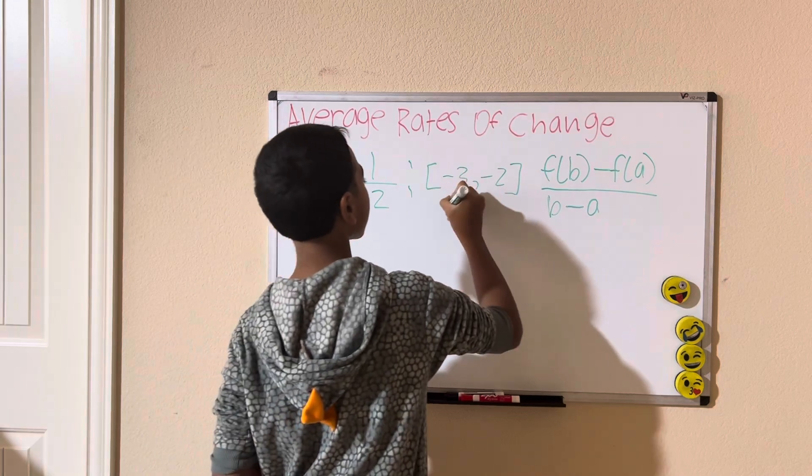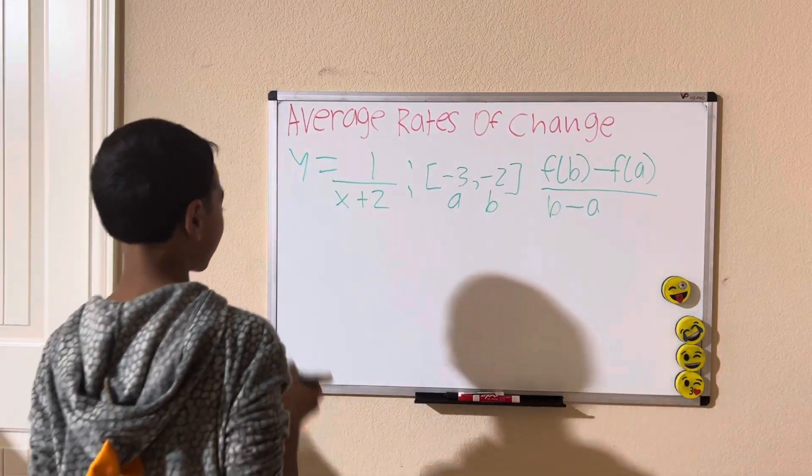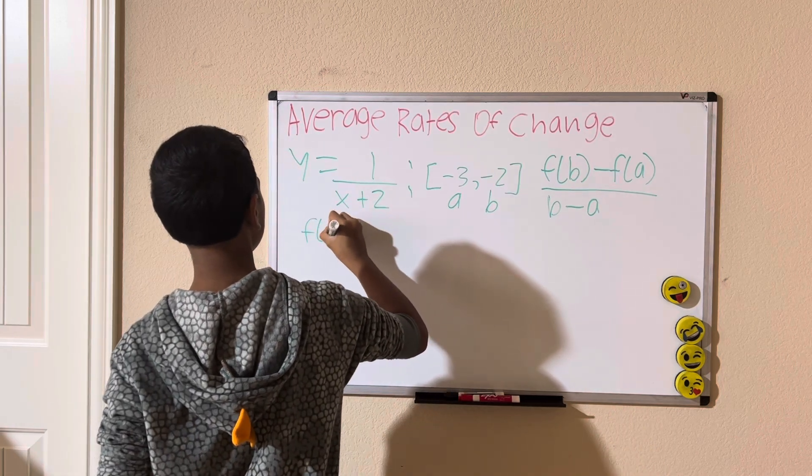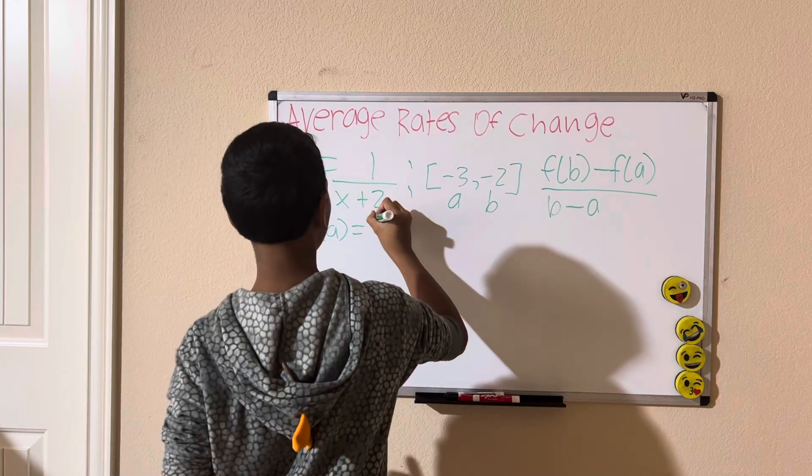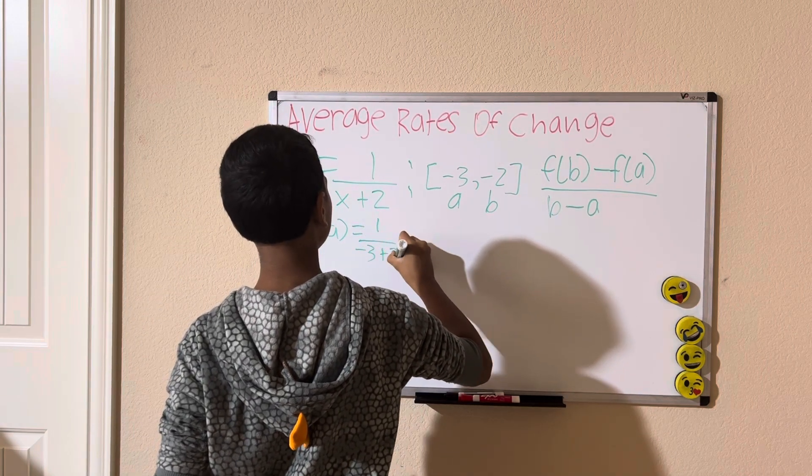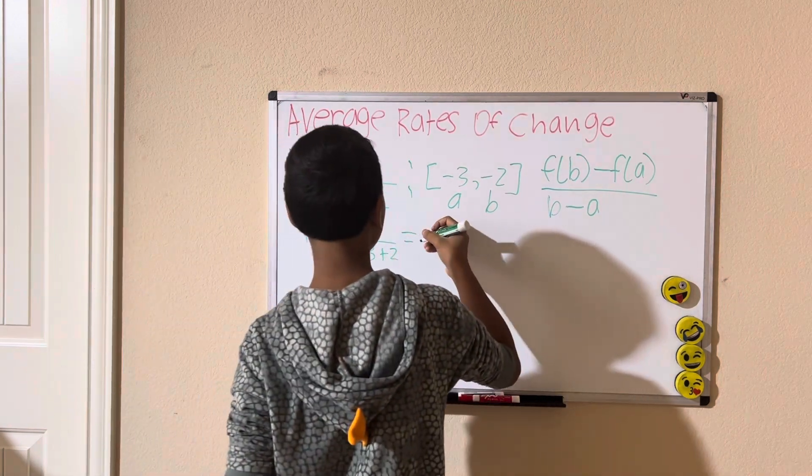So, a is negative 3, and b is negative 2. Now, let's find f of a first. f of a equals 1 divided by negative 3 plus 2, which is equal to 1 divided by negative 1, which is negative 1.